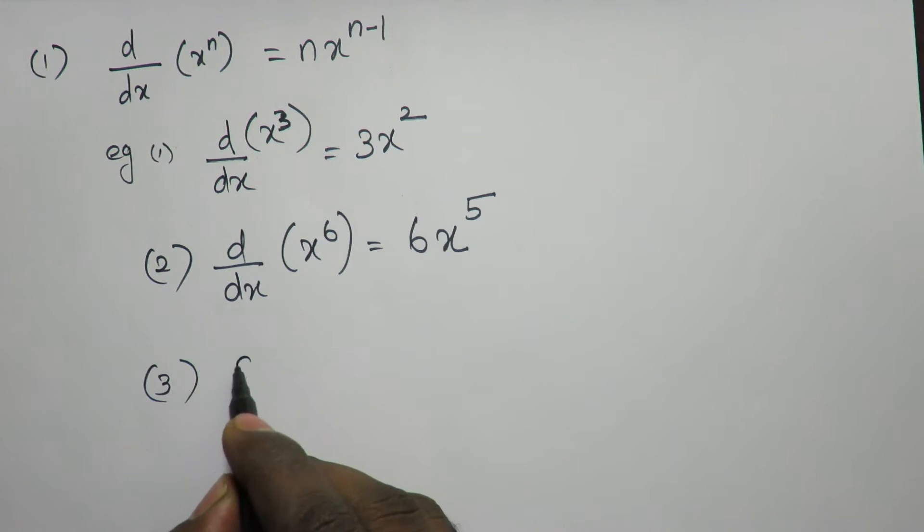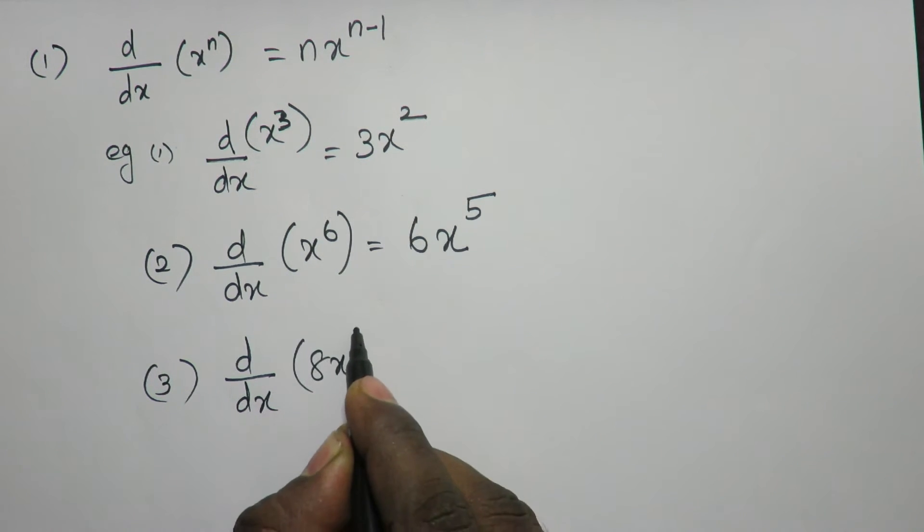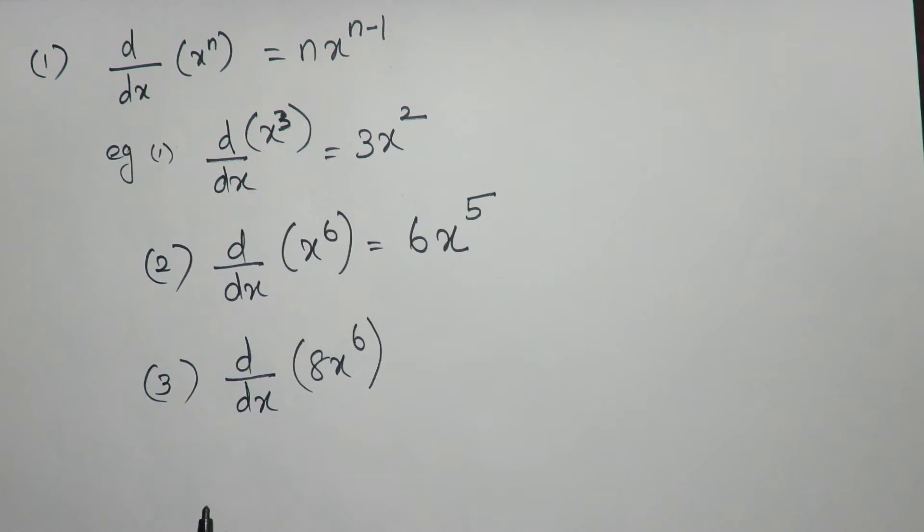Okay, I will give you an example. Differentiate 8x power 6 with respect to dx, which is equal to, how do you do? It is a constant product with variable.